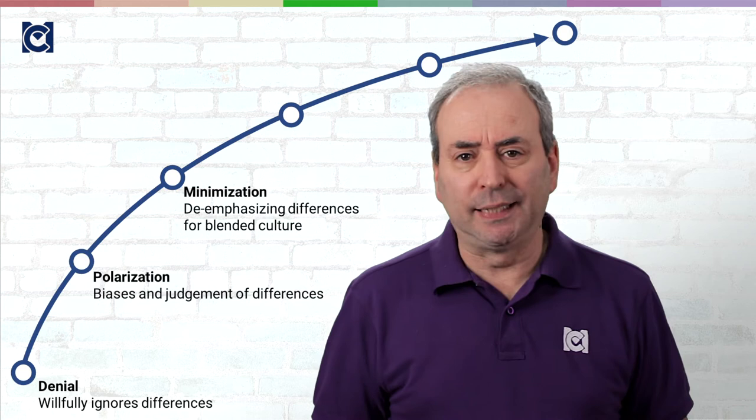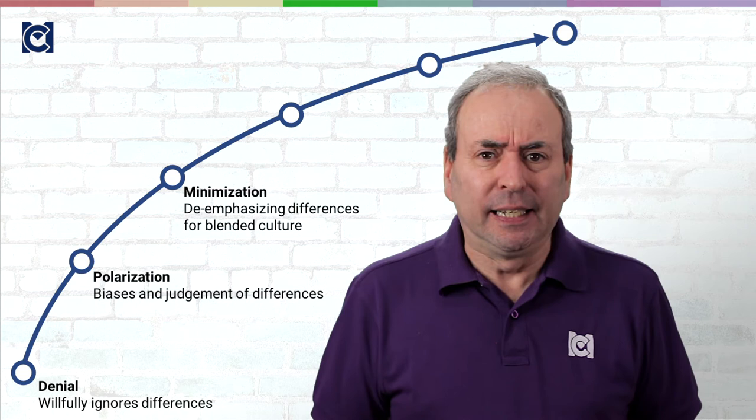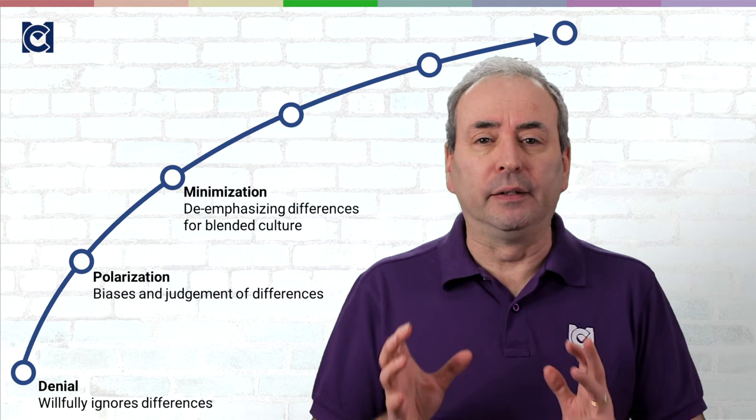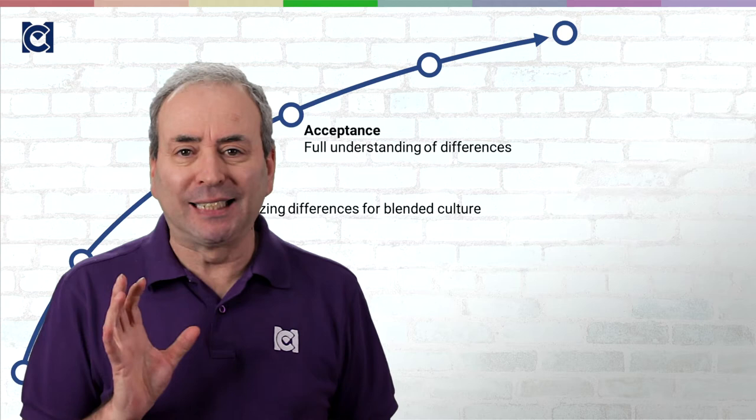The next stage is minimization. De-emphasizing the differences between us so that we can focus on what we have in common and kind of ignore those tricky edge cases. Those tricky disagreements about the way we ought to behave. Putting to one side the individual cultural norms that some of our colleagues have and treating them as something separate to the team itself.